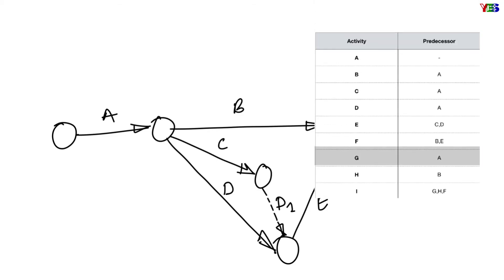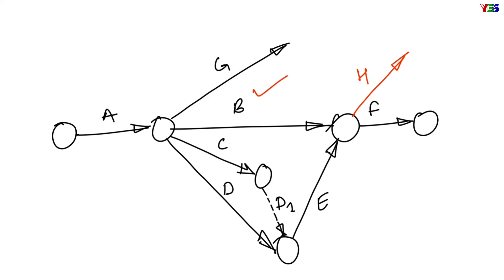Next, here we have one more successor of activity A, that is activity G. In the next row we are having activity H and it is showing B as predecessor of this activity. If we will make activity H after common head event of activity B and E, it will show activity E also as successor of activity H, which is not true. So